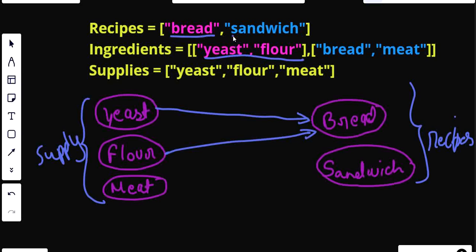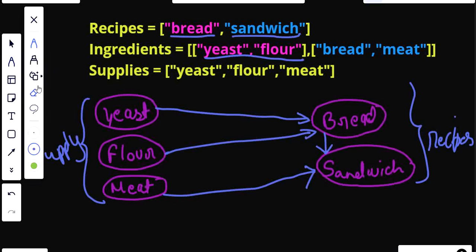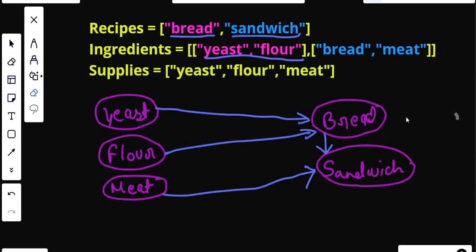Moving to the next recipe — sandwich needs bread and meat. Meat is present in our supply. Bread is also present in our recipes and I've already created it, so I can connect that as well. Now we have connected all the edges, and if I observe this whole diagram I can clearly see something important about the in-degrees of these nodes.